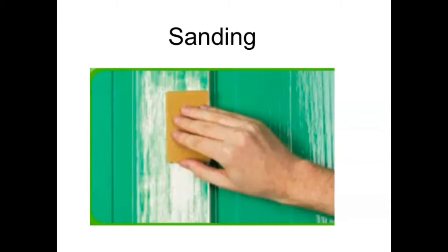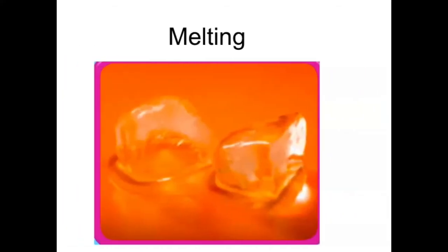So sanding can change the color of an object, the texture, and if I was sanding something like chalk, it could even change the size. Another way that I can change matter is by melting an object. So when I melt something, I add heat to it. And when I'm melting something, it changes not only its size, but its state of matter. So if I melt a piece of ice, a piece of ice is a solid.